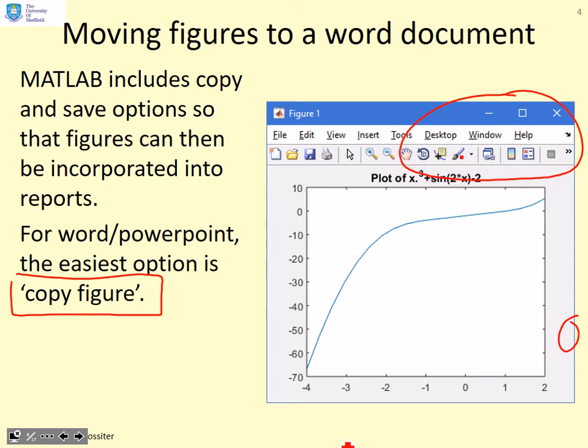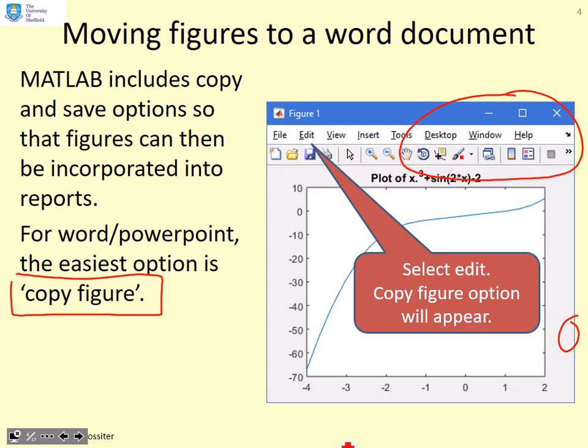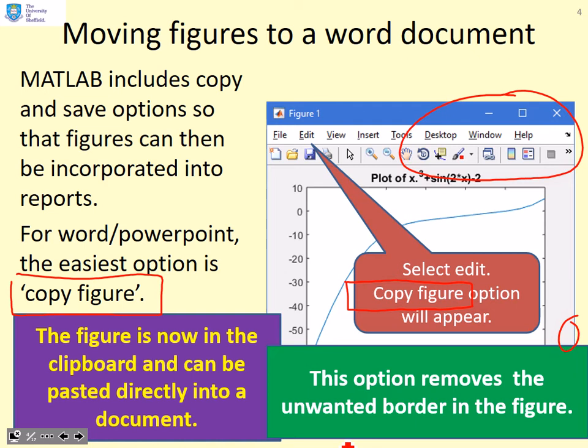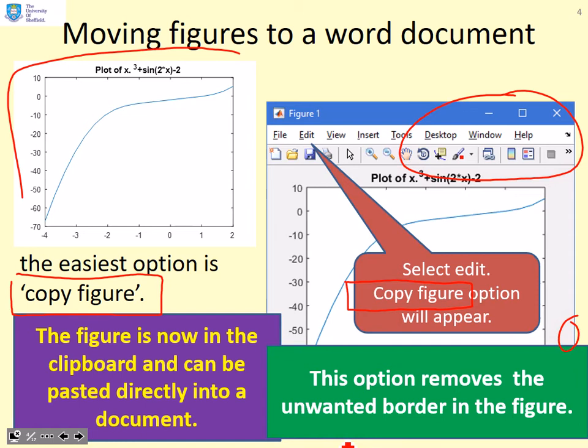The answer is you need to use the copy figure option. So you go to the edit button here. If you select that edit button, then a copy figure option will appear. So you select that copy figure option. Once you've done that, the figure will move into the clipboard and now it can be pasted directly into a document. And this way of doing things removes all the unwanted borders in the figure.